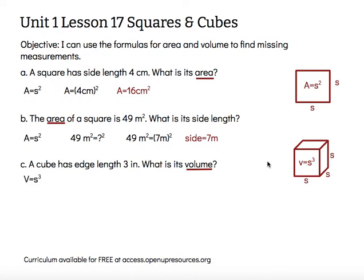So, there's our formula. We're going to substitute what we know, which is the length. The side length is three inches. So, I'm going to put three inches in for my side length. And then, I'm going to cube that number.